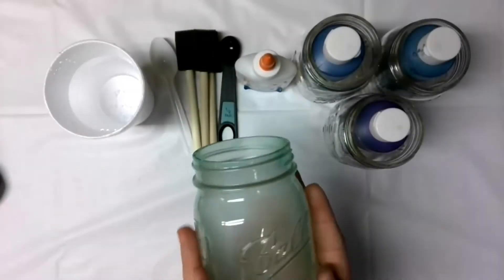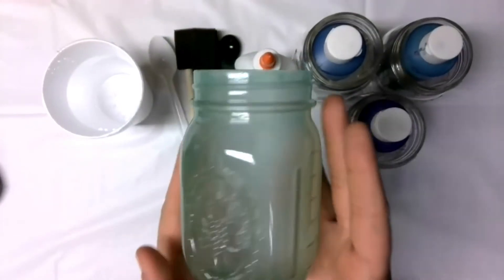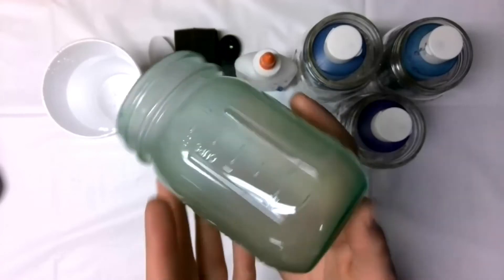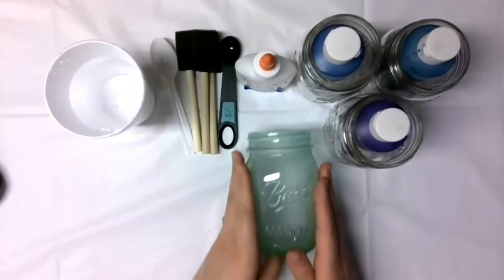So as you can tell here this is our sample of the sea glass mason jar. It's a regular mason jar but it has a slightly green hazy tint to it so I'm gonna show you how to make this.